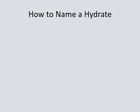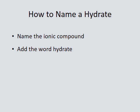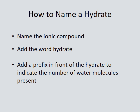So how do we name a hydrate? It's going to be three things. First, you're going to name the ionic compound regularly. Then after that, you're going to add the word hydrate. So this compound is going to have three names: the two names for the ionic compound and the word hydrate. And then lastly, we're going to put a prefix in front of the hydrate just to tell us how many water molecules are present in the particular hydrate we're talking about.